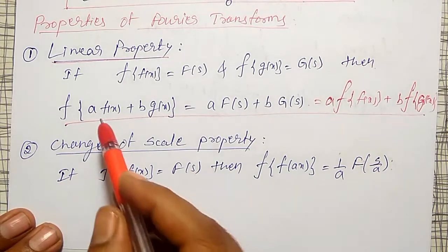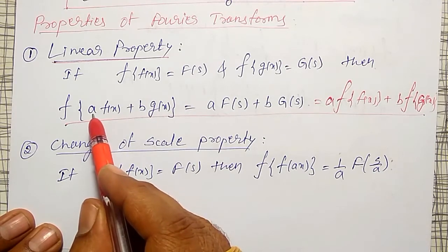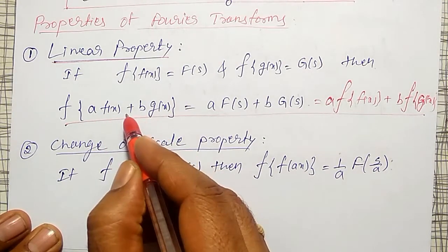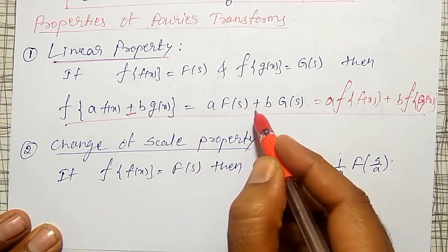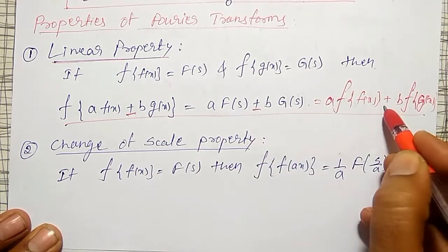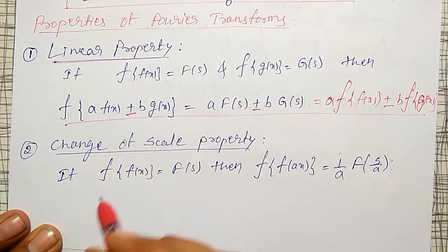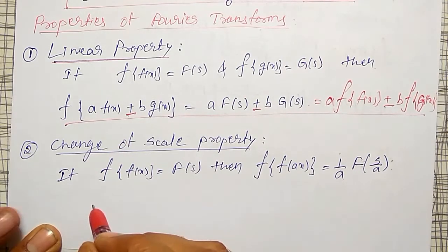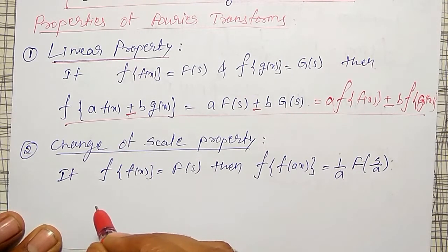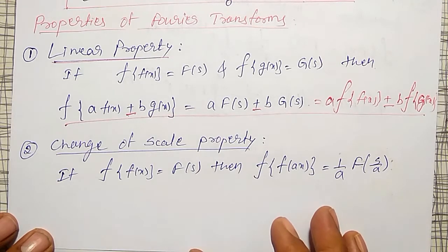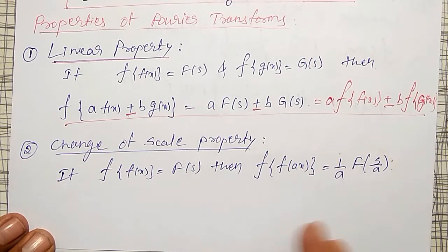Linear property means if you are multiplying by constants and adding or subtracting, the property holds good. If you are subtracting, it will also hold good. But multiplication of two functions will not hold good. That is known as the linear property.